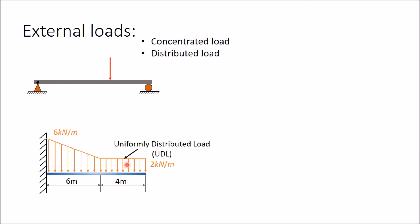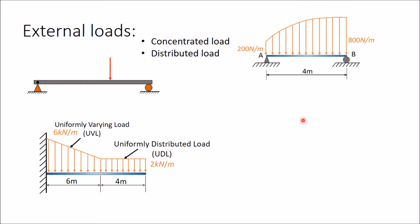This type of load is called uniformly distributed load. Here from one point to another, load is uniformly varying from 2 kN per meter to 6 kN per meter, so this type of load is called uniformly varying load. There may also be loads which are arbitrarily distributed, with intensity varying — for example from 200 N per meter to 800 N per meter — according to some relation.